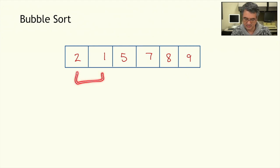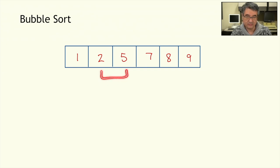Another pass. 2 and 1 need to be swapped. 2 and 5 are in the correct order. 5 and 7, 7 and 8, 8 and 9. Now at this point the array is sorted. But in the simplest version of this algorithm, we would make a total of five passes through the array. That would guarantee that the top five values would bubble into the correct slots, and the very last value would also be in its correct slot.